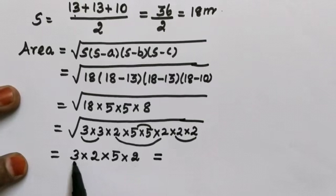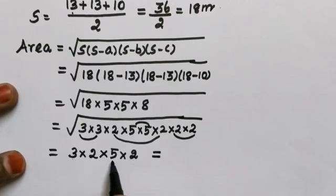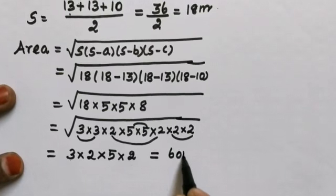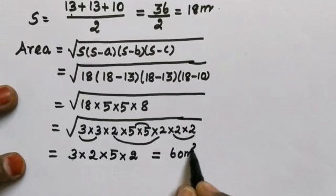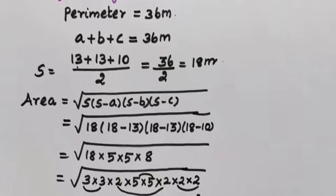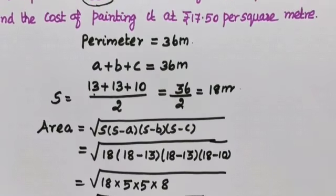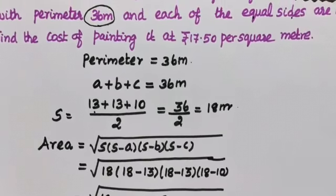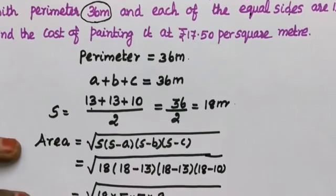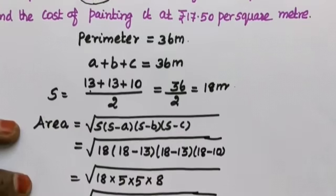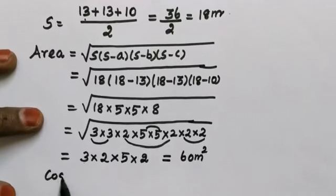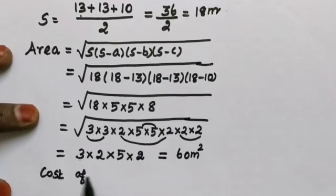Area value: 3 twos are 6, 6 fives are 30, 30 twos are 60. So area equals 60 meter square. Next in the question, we calculate the cost of painting. 1 square meter costs Rs. 17.50. Total area is 60 meter square.